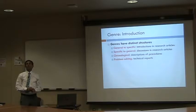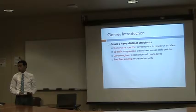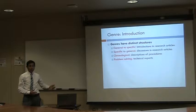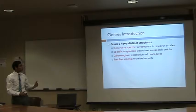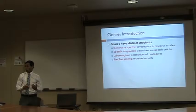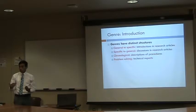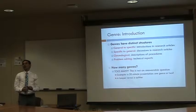Some of the very common structures in genres may be general to specific — like when we write a research paper introduction, starting very broad and getting into the details. But it could be the opposite: specific to general, as in a discussion section where we move from small components to the bigger picture. Some genres are chronological, presenting procedures or steps for getting something done; others might be problem-solving.